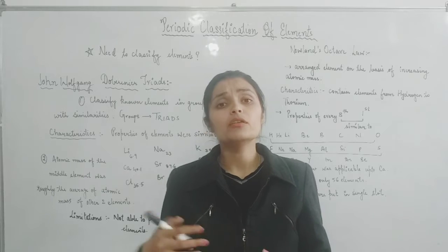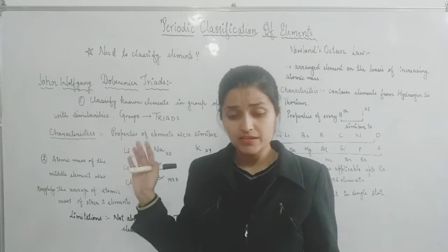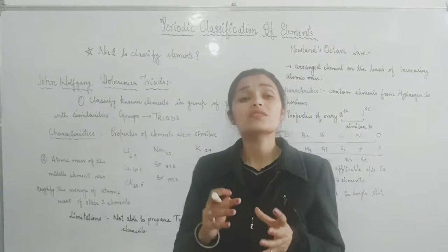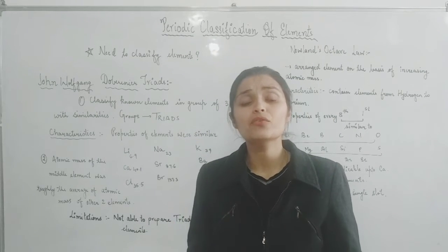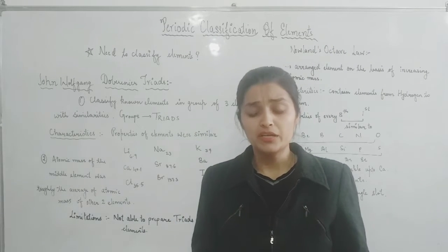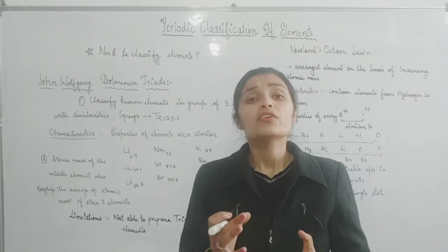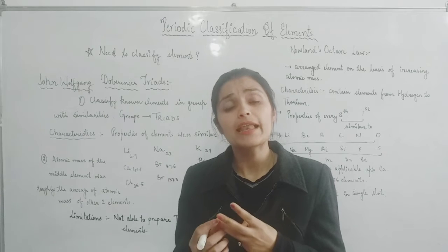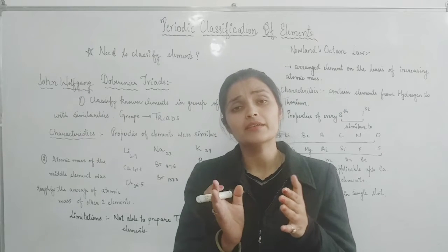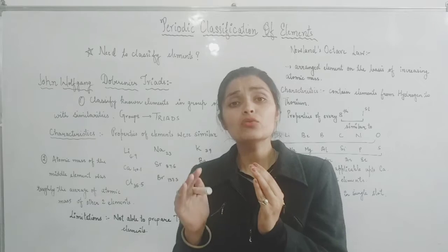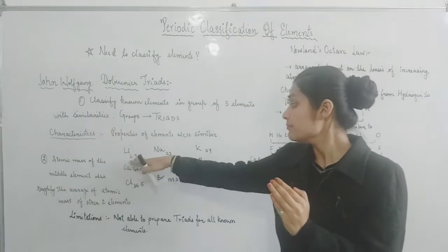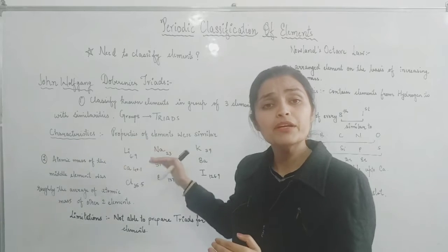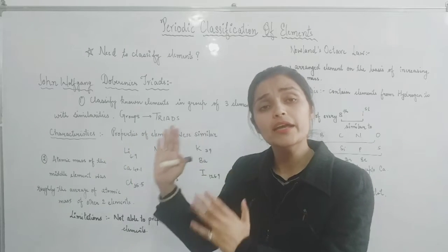First of all, Dobereiner — the full name is John Wolfgang Dobereiner. His theory was basically about triads. Triads means three elements grouped together in one group. For example, lithium, sodium, and potassium are made into one group.